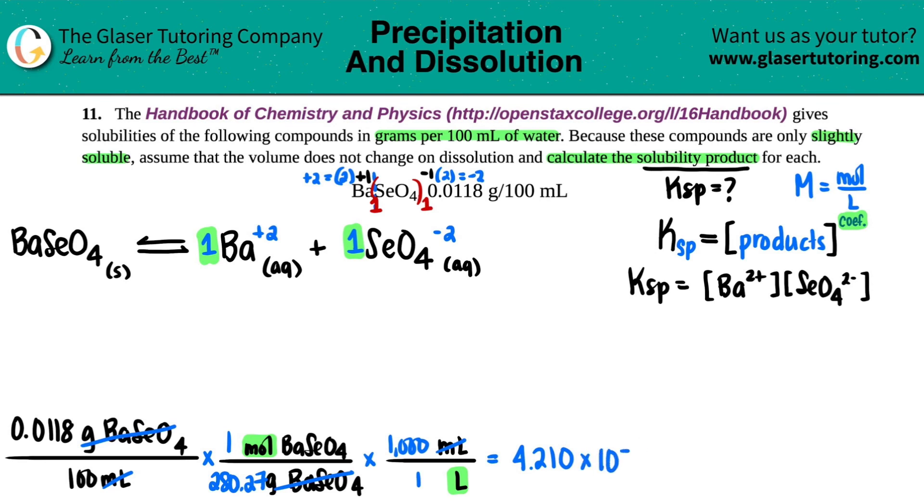Times 10 to the negative fourth. And that is mole per liter of the original compound, the BaSeO4. So that's this one over here. So I have 4.210 times 10 to the negative fourth. And now I'll just put like capital M.